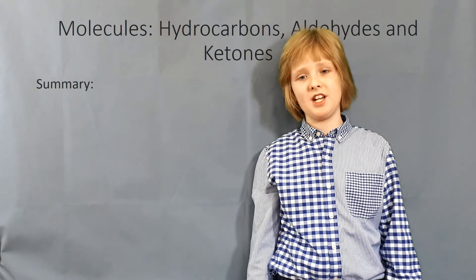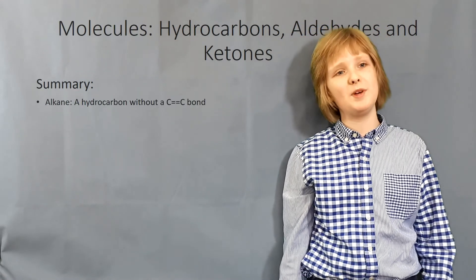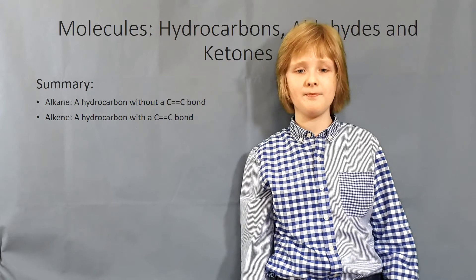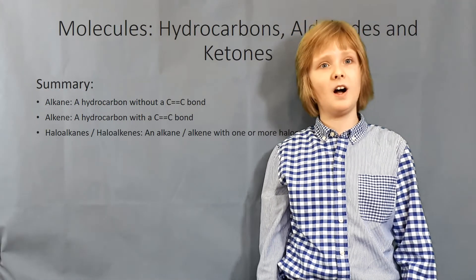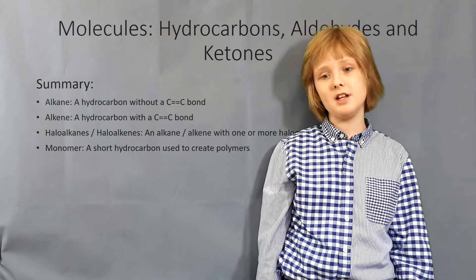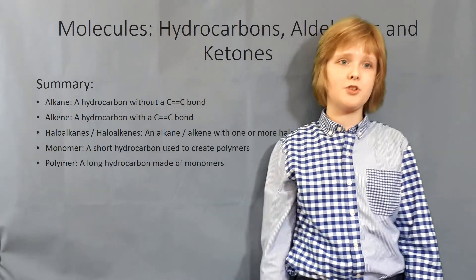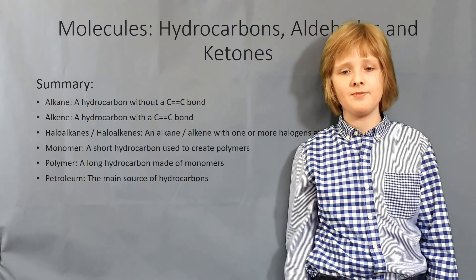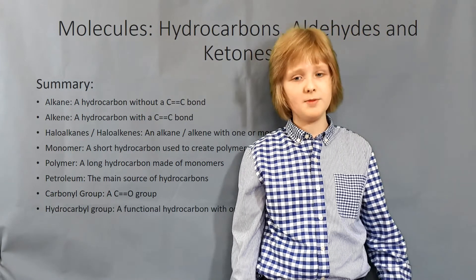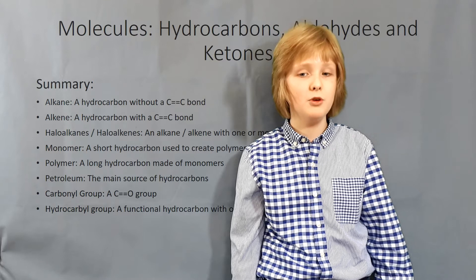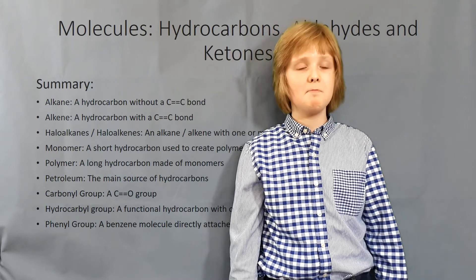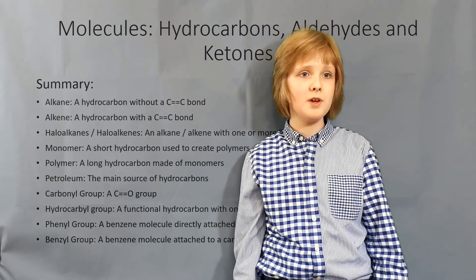Here's a summary of what we've learned today. An alkane is a hydrocarbon without a C-C double bond. An alkene is a hydrocarbon with a C-C double bond. Haloalkanes and haloalkenes are alkanes or alkenes with one or more halogen atoms attached. A monomer is a short hydrocarbon used to create polymers. Petroleum is the source of hydrocarbons. Carbonyl groups are C=O double bond groups. Hydrocarbol groups are functional hydrocarbons with one hydrogen removed. Phenyl groups are benzene molecules directly attached to a carbonyl. And benzyl groups are phenyl groups but with an extra CH2.